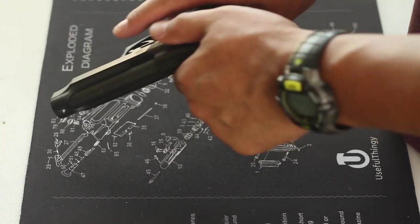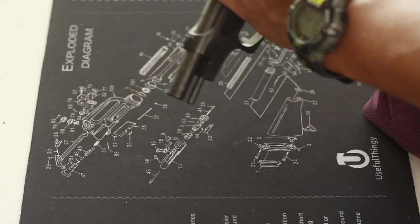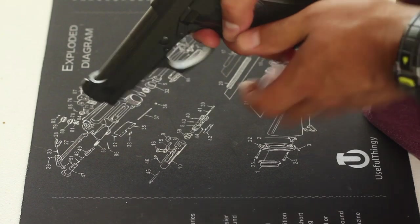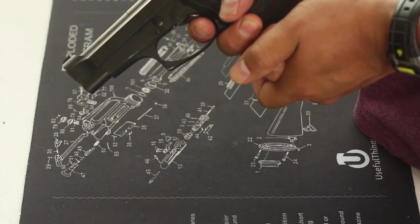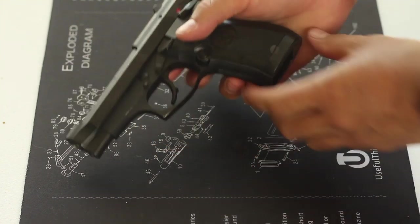Now do a function check. With the magazine in, pull the slide back. Make sure it locks back. If it does, good. Pull the magazine back out. Point in a safe direction. Pull the trigger. Work the slide. Keep holding the trigger while you're doing that. Release the trigger and pull it again. If you hear the click, you're good to go.